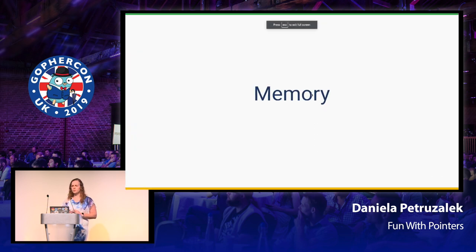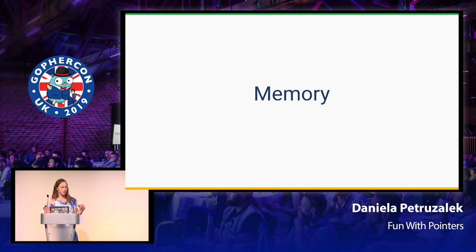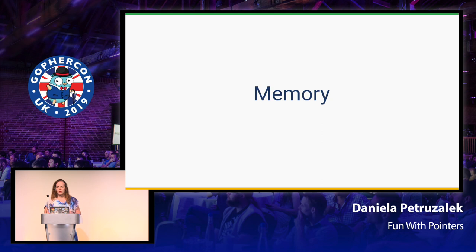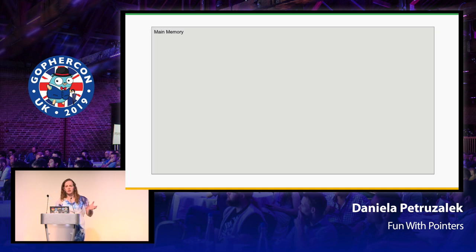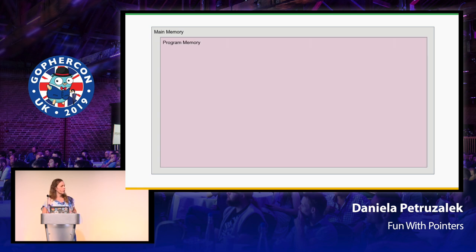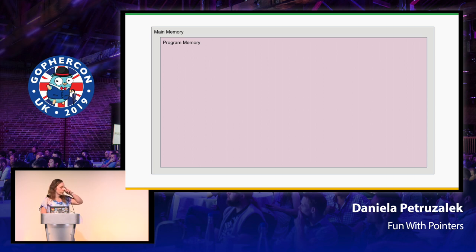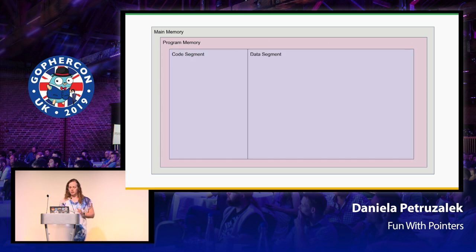Now let's talk about performance and when we want to avoid copying values. For that, it's useful to have a refresher on memory. Think about your machine: you have main memory, and your program memory — the part allocated to your program — divided into segments. Mostly you have the code segment, where your code lives, and the data segment, where your data lives.